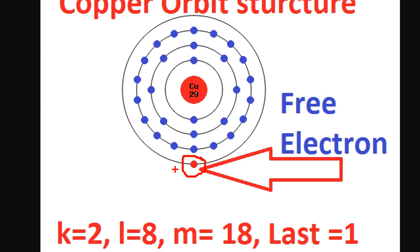We have to talk about the voltage. We have to talk about copper and the free electron. The value of a free electron is 1.602 × 10⁻¹⁹ coulombs. J.J. Thomson identified the electron. If we tell the number of electrons and protons — the electron has a negative charge of 1.602 × 10⁻¹⁹ coulombs. That is the charge of one electron. In a conductor, there is at least one free electron.